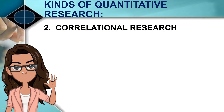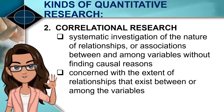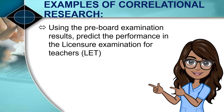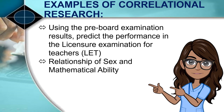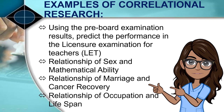The second kind is correlational research. It is the systematic investigation of the nature of relationships or associations between and among variables without necessarily investigating the causal reasons underlying them. It is also concerned with the extent of relationships that exist between or among the variables. Examples: using pre-board examination results to predict performance in the Licensure Examination for Teachers (LET); relationship of sex and mathematical ability; relationship of marriage and cancer recovery; and the relationship of occupation and lifespan.